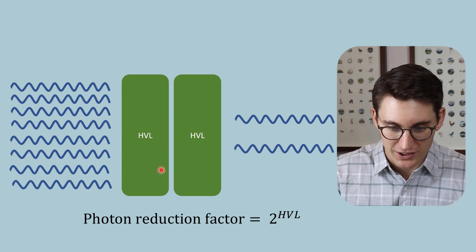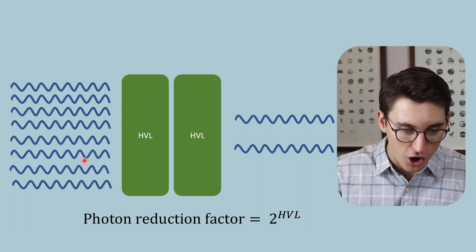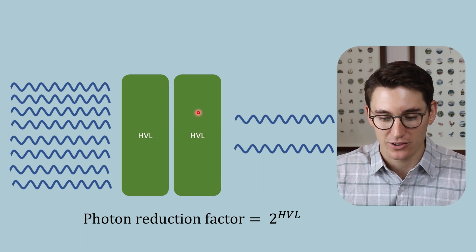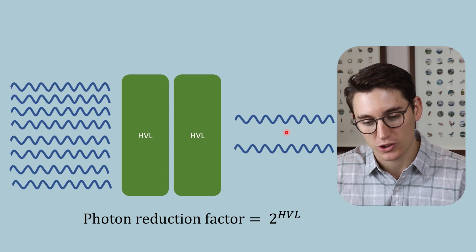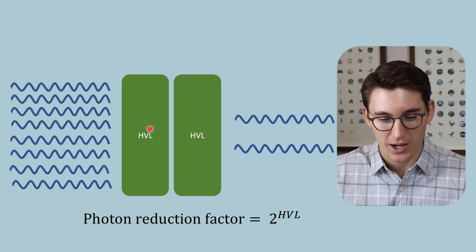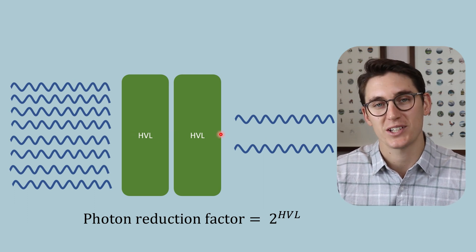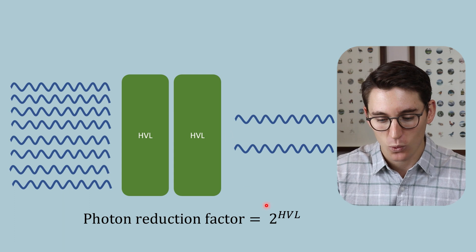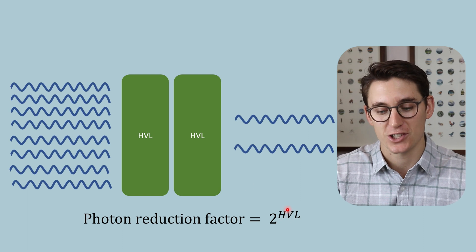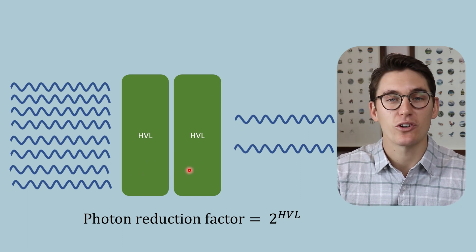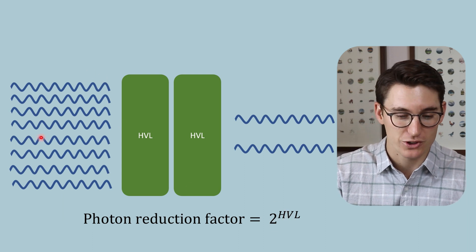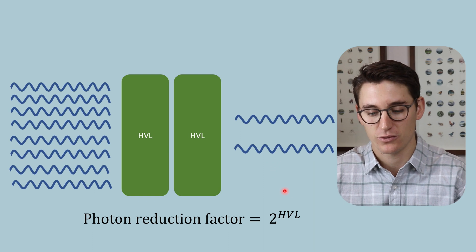Four photons are removed in the first half value layer — half of the eight. Those four remaining photons then interact with the next half value layer, in which half are removed, and two photons make it to the other side. To calculate the factor by which photons are reduced over a set number of half value layers, we use: 2 to the power of the number of half value layers equals the factor of reduction. Here, two to the power of two is four — we've reduced eight to two, a factor of four.